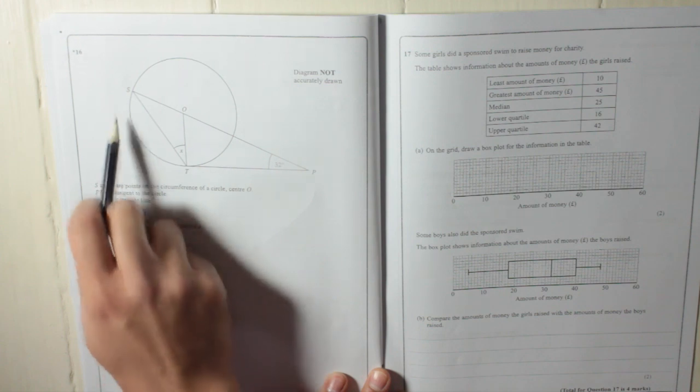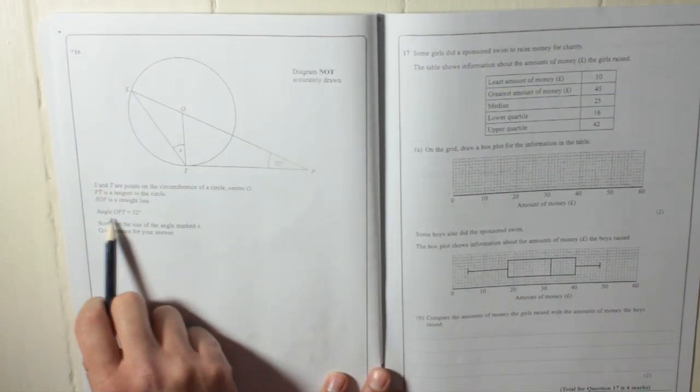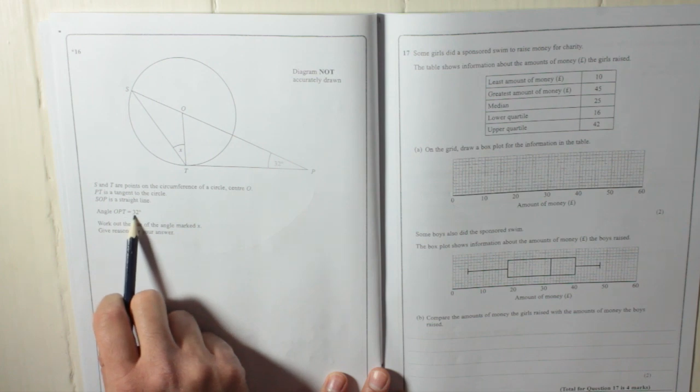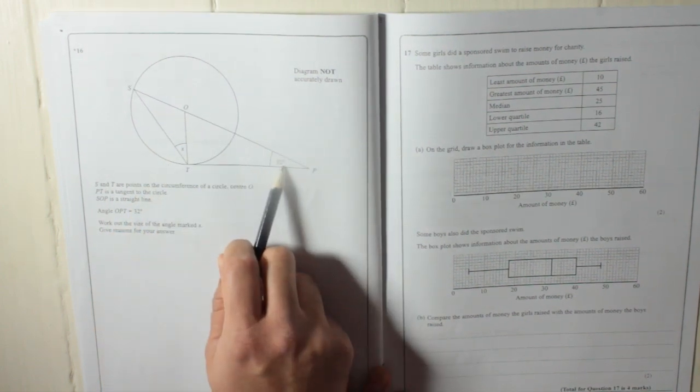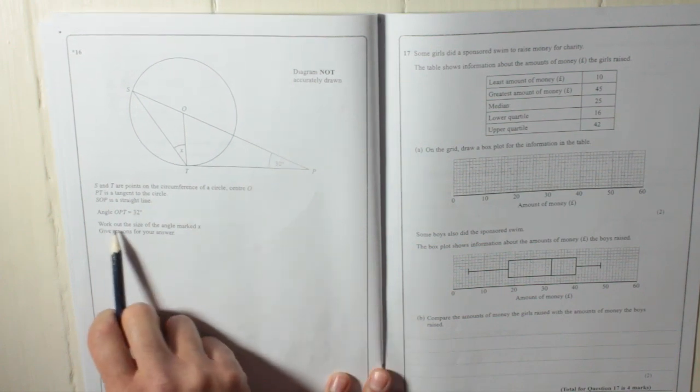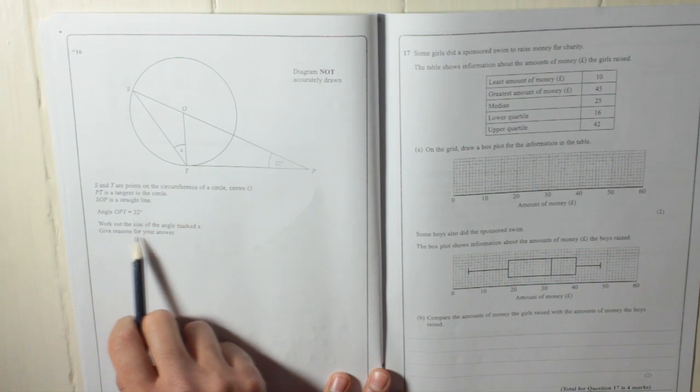SOP is a straight line. SOP, straight line. Angle OPT is 32 degrees, so OPT, that's that angle there, which you can see, 32 degrees. Work out the size of the angle marked X. Give reasons for your answer.